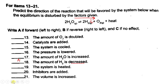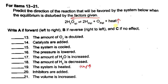Number 19: the system is heated, meaning we are increasing the temperature. That means we are increasing the heat on the products side. To balance this, the equilibrium will shift to the left to use this extra heat. So this favors the reverse reaction — letter B.